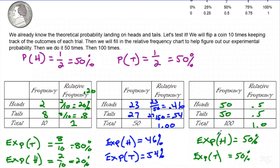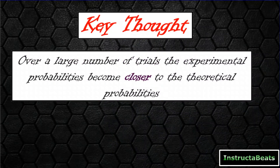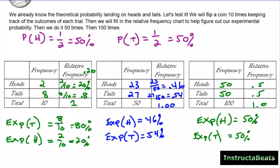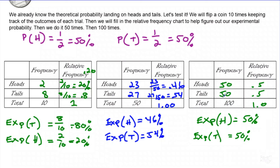What you see here is something that actually happens quite a bit. It doesn't necessarily happen after only 100 trials, but this leads us to our key thought: over a large number of trials, the experimental probabilities become closer to the theoretical probabilities. The more trials you do — the larger sample size you have — the closer your experimental probabilities will get to your theoretical probabilities. When we had only done 10, they weren't even close. As our sample size got larger, they got closer and closer, and eventually it was exactly the same. Sometimes this could take 1,000 coin flips or even a million, but as you do more and more, the theoretical and experimental probabilities will get closer and closer.